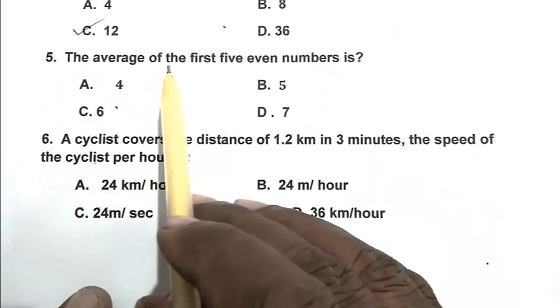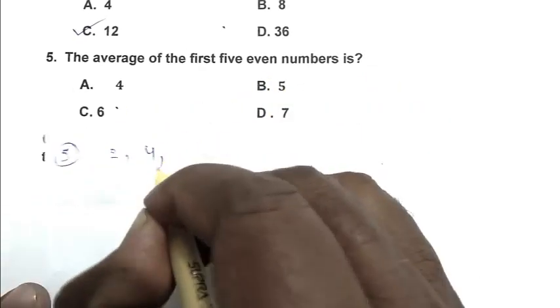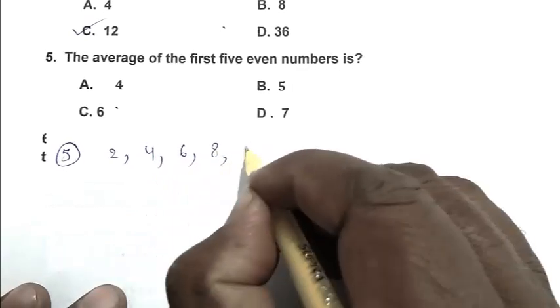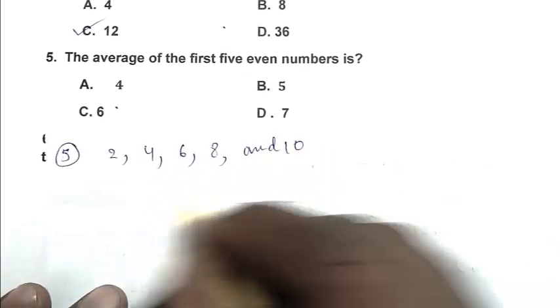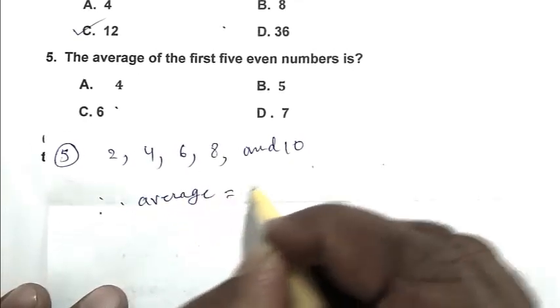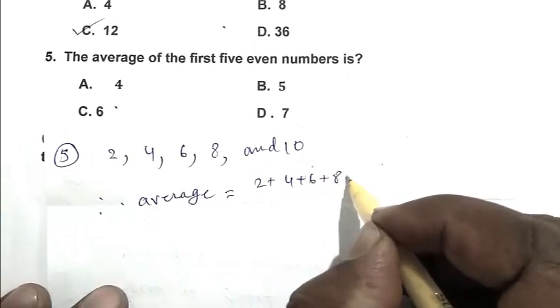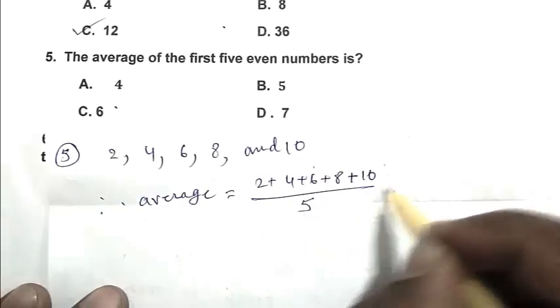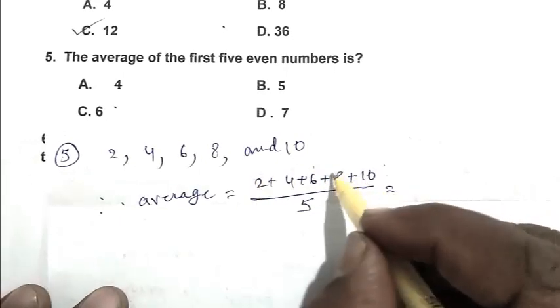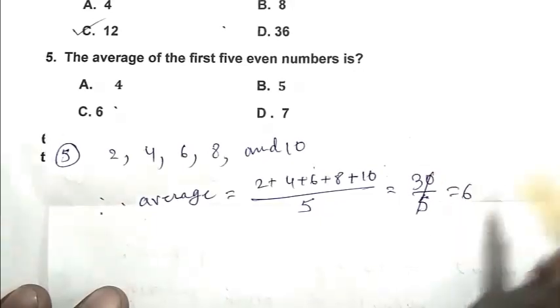Question number 5: The average of the first 5 even numbers is. The first 5 even numbers are 2, 4, 6, 8, and 10. So average = (2 + 4 + 6 + 8 + 10) / 5 = 30 / 5, that is 6. So C is the right answer.